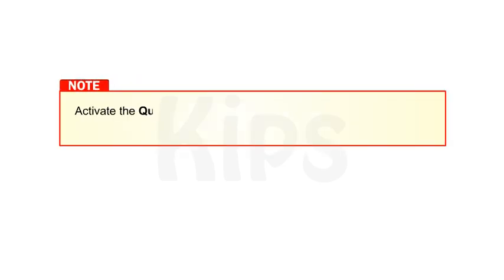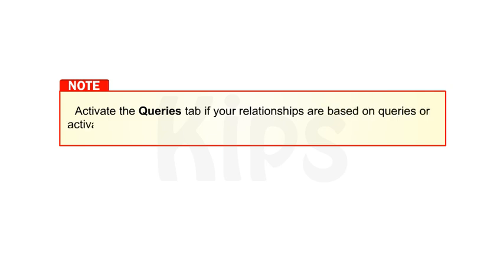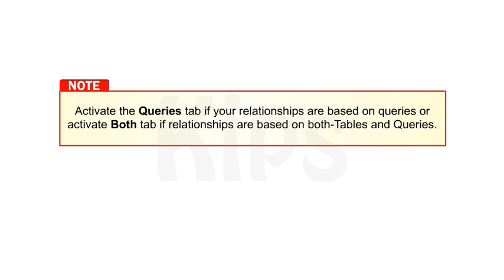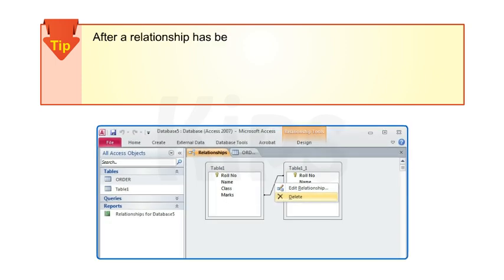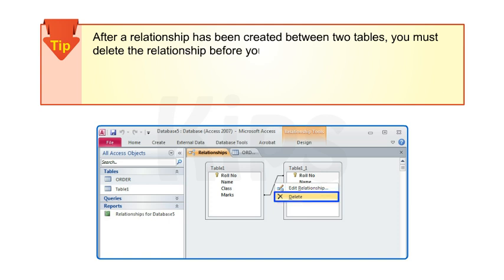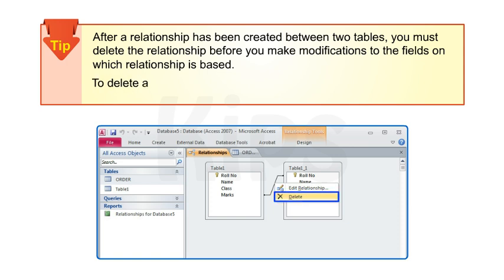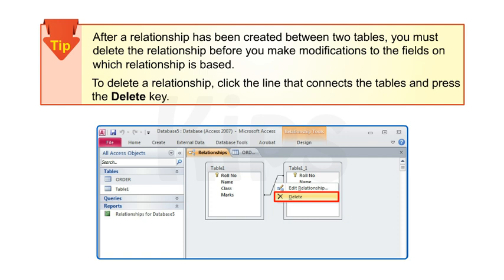Note: activate the Queries tab if your relationships are based on queries, or activate the Both tab if relationships are based on both tables and queries. After a relationship has been created between two tables, you must delete the relationship before you make modifications to the fields on which the relationship is based. To delete a relationship, click the line that connects the tables and press the Delete key.